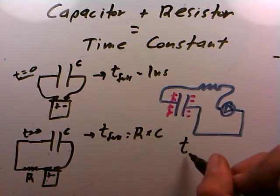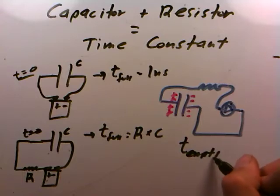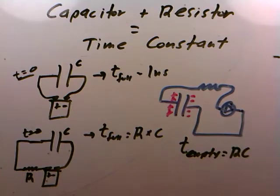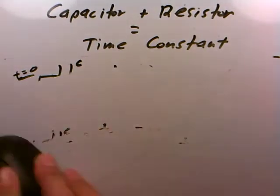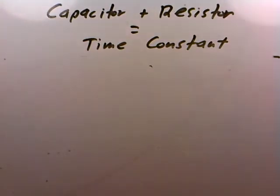So we can write down T to empty is also equal to the product of R times C. Because you're free to choose whatever R, whatever C you want, you're also free to choose how long these times occur. So let me give you a demonstration now of this in the discharge effect.